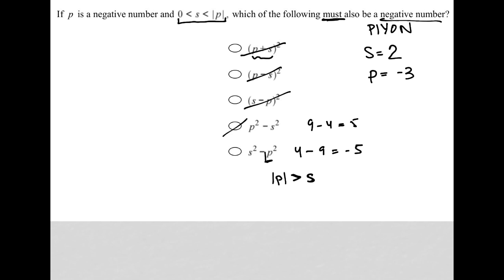So when I square it, that squared number will always be greater than S squared, so then if I subtract a larger number from a smaller number, my answer will always be negative, and therefore this is the correct answer here.